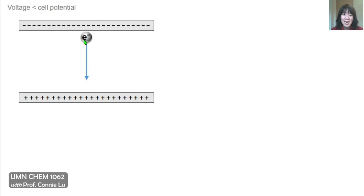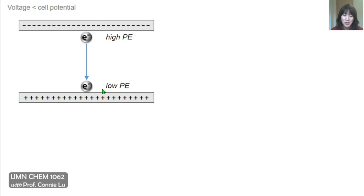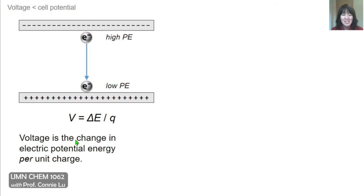An electron would move naturally towards the positive plate, because that would be an attractive force. So this electron would initially start at a position where it has a high electric potential energy, and as it moves towards the positive plate, that electric potential energy would get lowered. Voltage is defined as the change in this electric potential energy per unit charge, captured in the equation: voltage V equals the change in energy ΔE divided by charge Q.